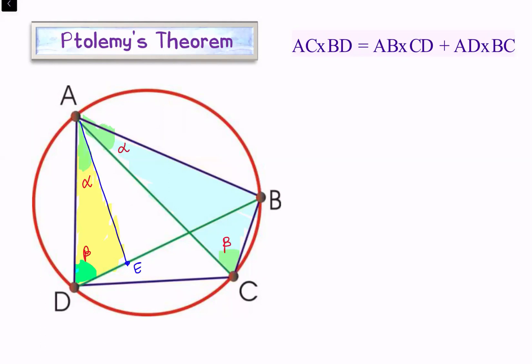So these yellow and blue triangles are similar to each other. Triangle ADE is similar to triangle ACB. When triangles are similar, then the ratio of the sides will be equal. So we are getting AD upon DE equals AC upon BC.